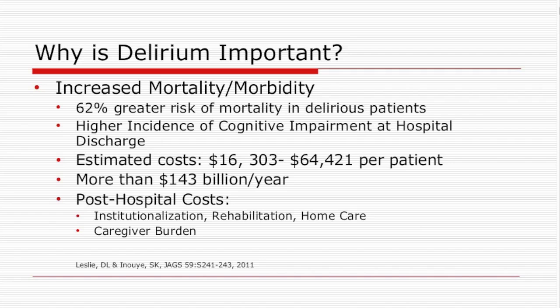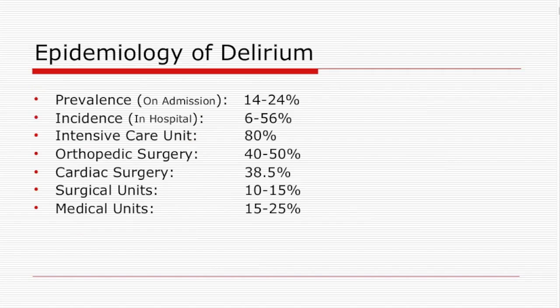With that, there is a significant increased cost to the healthcare system. The cost per individual varies from $60,000 to $64,000 per patient, and more than $143 billion per year is the cost to the healthcare system. This cost includes hospital costs and post-hospital costs, which includes institutionalization, rehabilitation costs, home care, and caregiver burden, because a family member in the caregiver role would often have to take time off to be with their loved one.